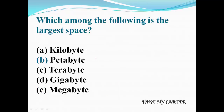Next question: which among the following is the largest space? A: Kilobyte, B: Petabyte, C: Terabyte, D: Gigabyte, E: Megabyte. Answer is Petabyte — Petabyte is the largest space. Also note: which among the following is the smallest space — answer is Kilobyte. Expect one question from this section.